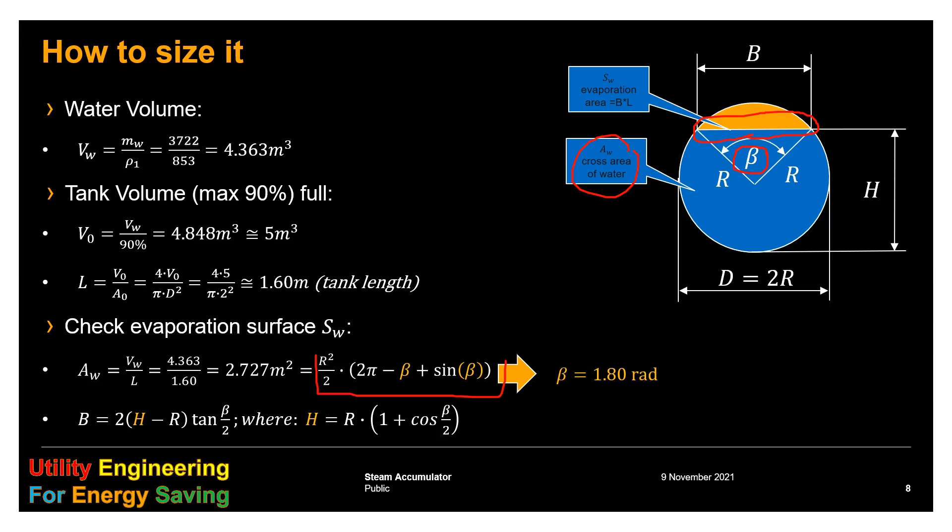For B we find 1.57 meters, and therefore the evaporation area, that is B times L, is 2.51 square meters.